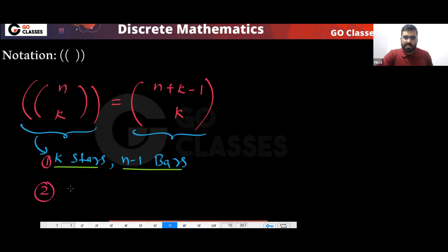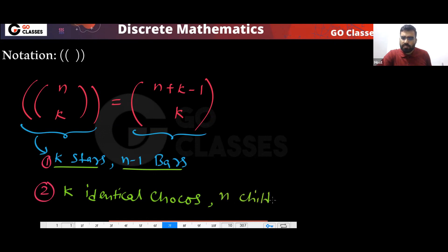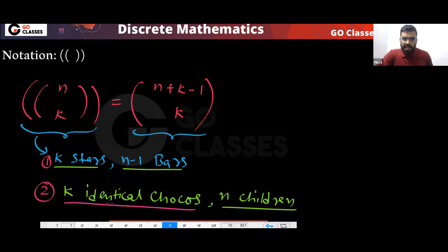Another way to think about it: you have K identical chocolates and N children. When you have N children, you have N−1 bars. So you have N children and K identical chocolates, and you want to distribute these K chocolates to the N children.